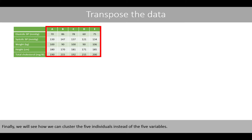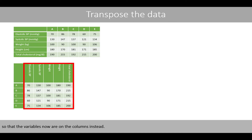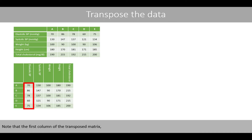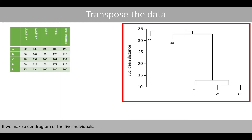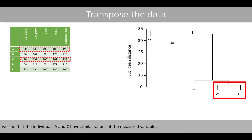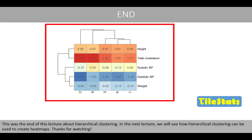Finally, we'll see how we can cluster the five individuals instead of the five variables. If your statistical software clusters based on the rows in the matrix, we can first transpose the matrix so that the variables are now on the columns instead. Note that the first column of the transposed matrix is identical to the first row in the original matrix. If we make a dendrogram of the five individuals, we see that individuals A and C have similar values of the measured variables, and that individual E has values that are similar to persons A and C. This was the end of this lecture about hierarchical clustering. In the next lecture, we'll see how hierarchical clustering can be used to create heat maps. Thanks for watching!